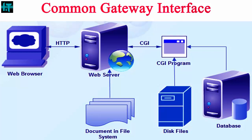CGI is a set of standards which define how information is exchanged between the web server and a custom script. The Common Gateway Interface is a set of rules for running scripts and programs on a web server. It specifies what information is communicated between the web server and client browser and how that information is transmitted.